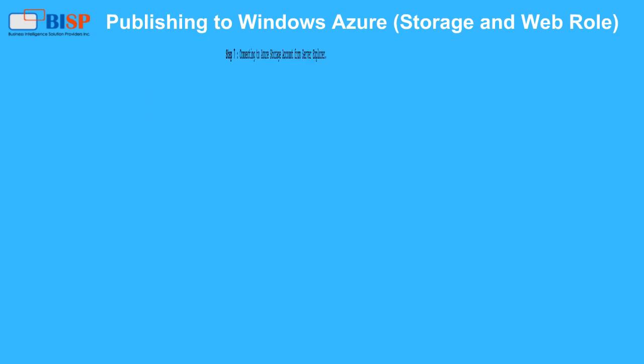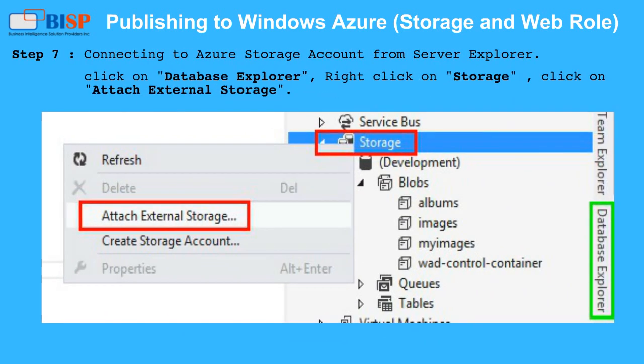Step 7: Connecting to the Azure storage account from Server Explorer. Click on Database Explorer, right click on Storage, and click on Attach External Storage.